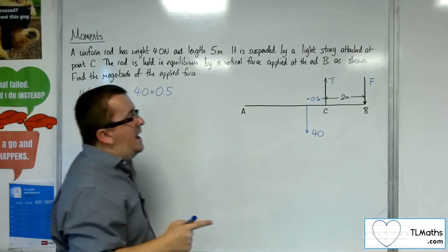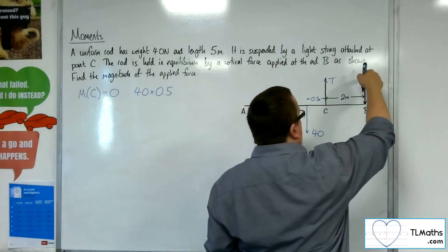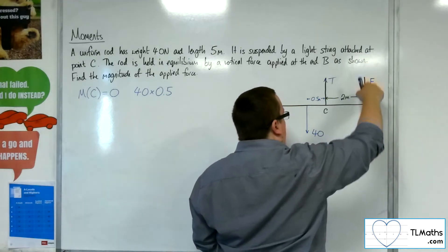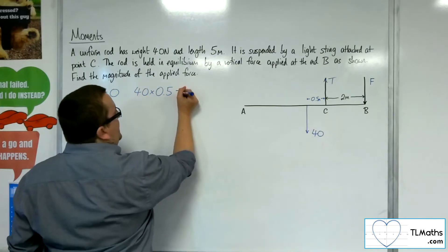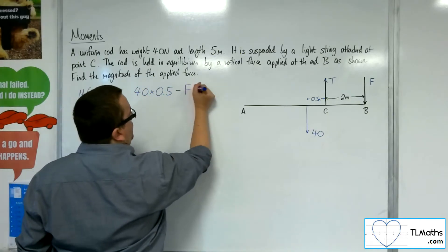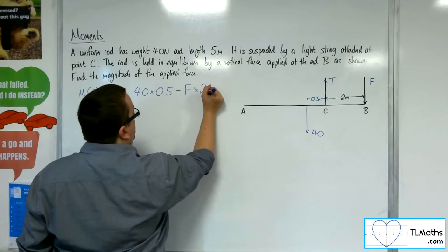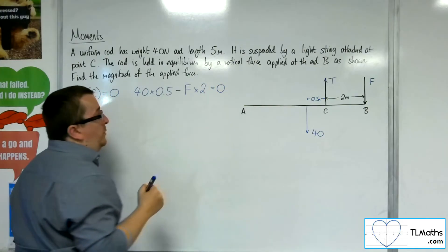and then I've got the force at B pressing down at B. Now that's going clockwise, so that would be negative F times its distance from C, so 2, and that's got to be equal to 0.